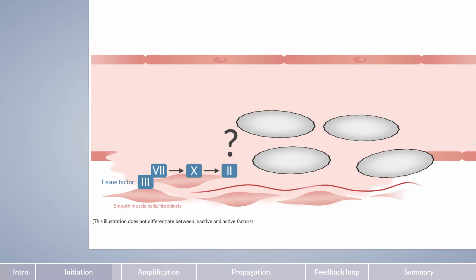Factor Xa can't be involved because it's rapidly inactivated when away from the cell membrane. Therefore, thrombin adopts the role of the mediator as it's able to reach the platelet surface. Let's explore this in more detail.